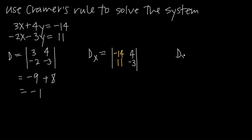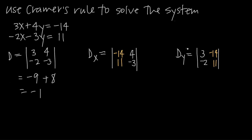I like to set up all of my matrices at once so I don't lose track of what I'm doing. So D sub y is equal to the coefficient matrix, but replacing the y column with the solution values negative 14 and 11, while keeping the x coefficients 3 and negative 2. Now I have all my matrices set up: the original coefficient matrix and one matrix for each variable, D sub x and D sub y.